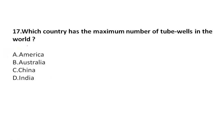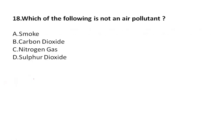Which country has the maximum number of tube wells in the world? It is India — India has the maximum tube wells, please remember. Which of the following is not an air pollutant? Smoke is an air pollutant; carbon dioxide is also an air pollutant; nitrogen is not an air pollutant. So the right answer is nitrogen gas.